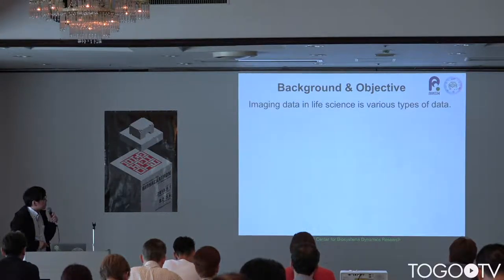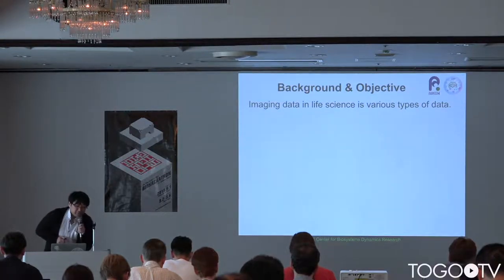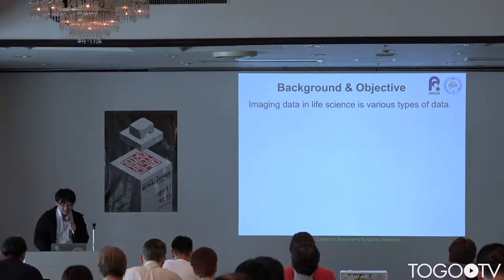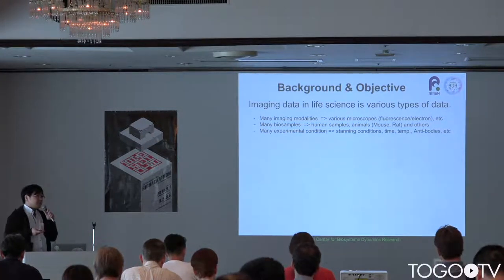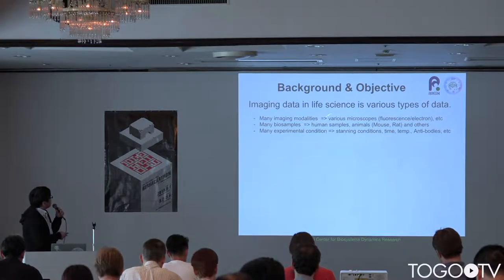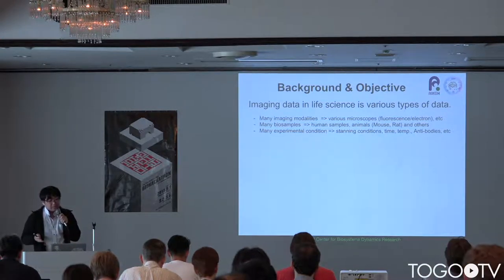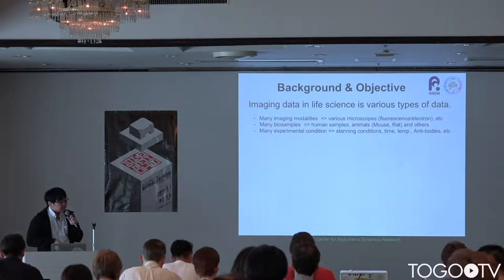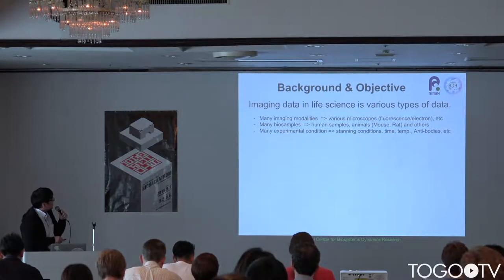Image data in life science comes in various types because biologists and experimenters use many imaging modalities — for example, various microscopes — and many biosamples, such as human or lab samples, and many experimental conditions, such as staining conditions, time, temperature, and antibodies.